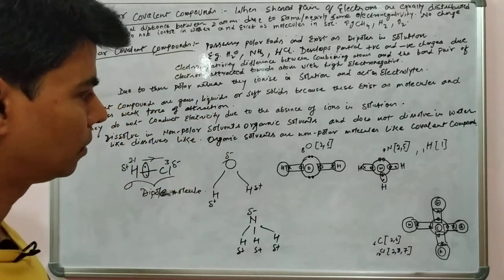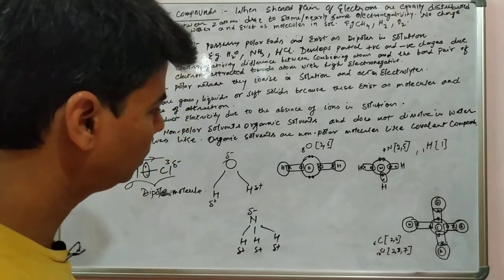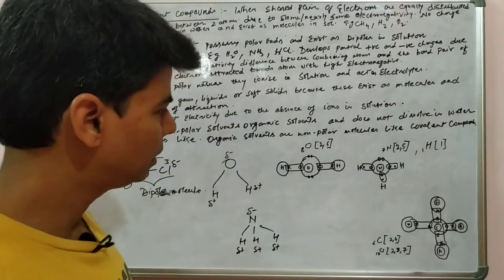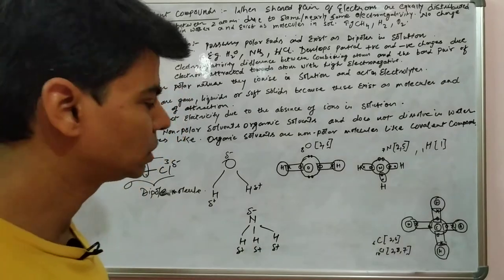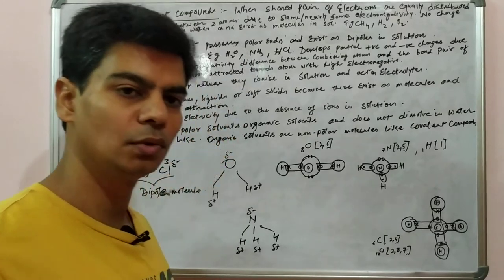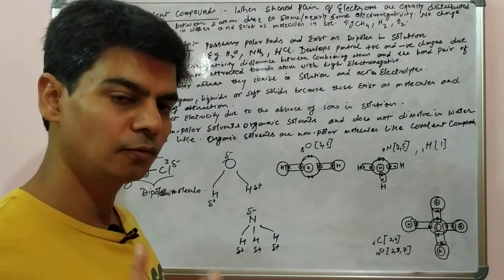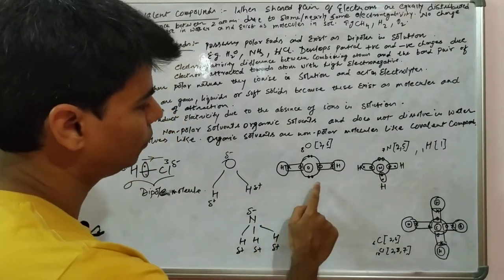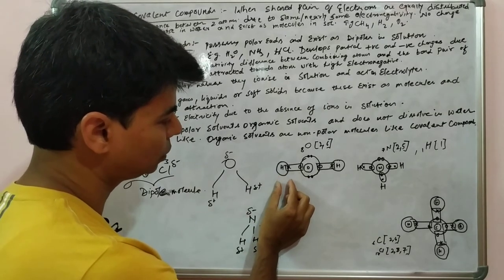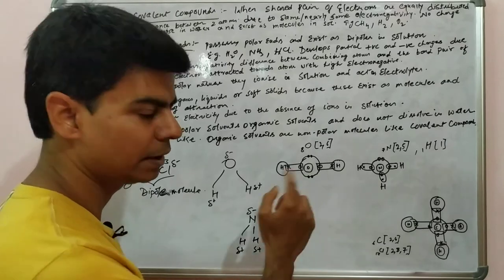Let's take the example of water as a covalent compound. Hydrogen has one electron in its outermost shell and oxygen has six. Hydrogen tries to make a doublet (two electrons) and oxygen tries to achieve an octet (eight electrons). Water has two hydrogen atoms and one oxygen atom, so when oxygen combines with these two hydrogen atoms, oxygen shares two of its electrons — one with each hydrogen atom — satisfying all atoms' electronic configurations.